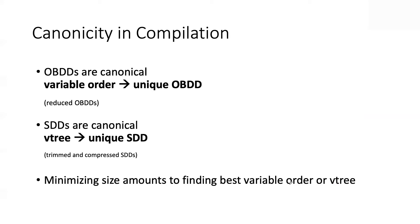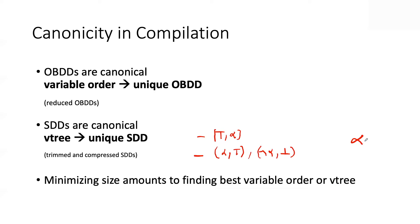Now let's talk about canonicity and why it's a significant concept for compilation. For OBDDs, canonicity means that if you fix the variable order there is a unique reduced OBDD. For SDDs, if you pick a v-tree there is a unique SDD, assuming it's compressed and trimmed. Trimming means not allowing trivial decision nodes — for example, a partition with one prime being true and sub being alpha, versus a partition with two primes alpha and not-alpha where the subs are true and false respectively. Both are equivalent to alpha, but only the trimmed form is canonical.